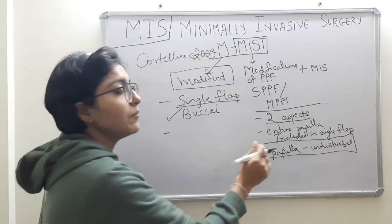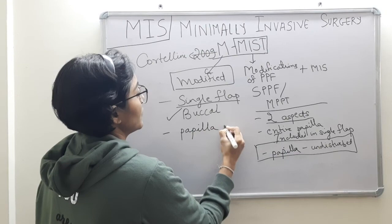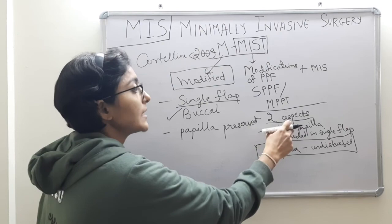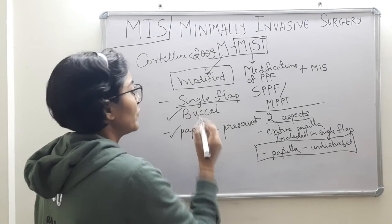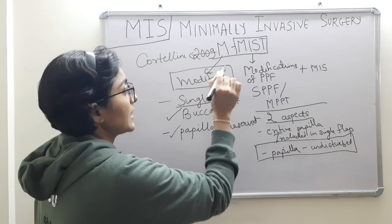The next modification concerns management of the papilla. Although papilla preservation is maintained, the difference here is that the papilla is primarily preserved — no incisions, no reflection, nothing like including it in the opposite flap as in the papilla preservation flap technique. These are the two major modifications of MMIST.